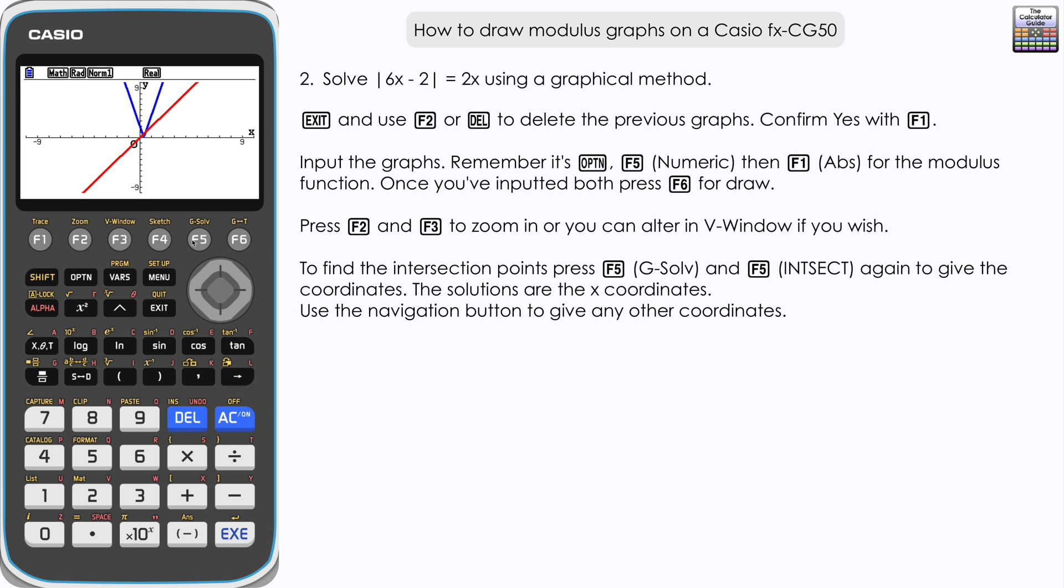To find the intersect points, that will be our solution. We're interested in the x values as our solutions. We've got x equals 0.25, so a quarter, which is one of the solutions. Navigate right and we've got our second solution, x equals 0.5, which is a half, and the corresponding y value of one.